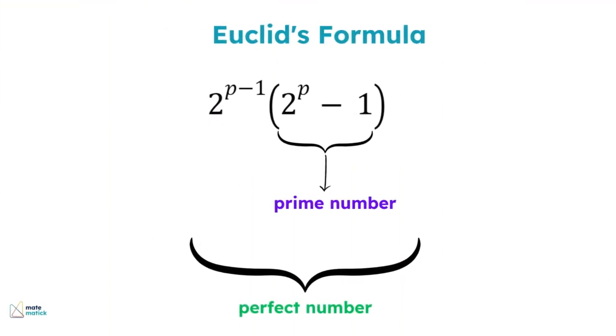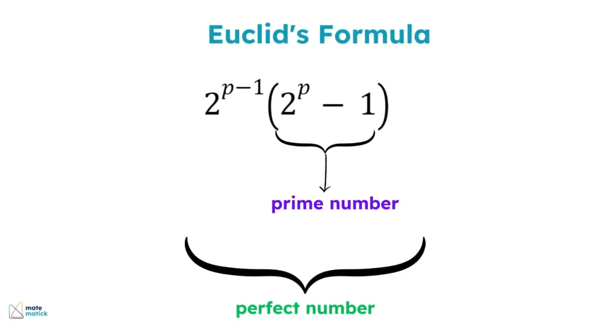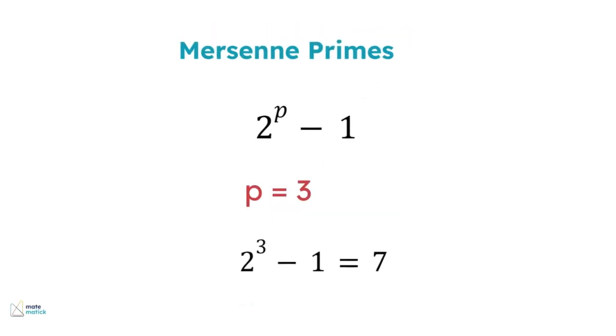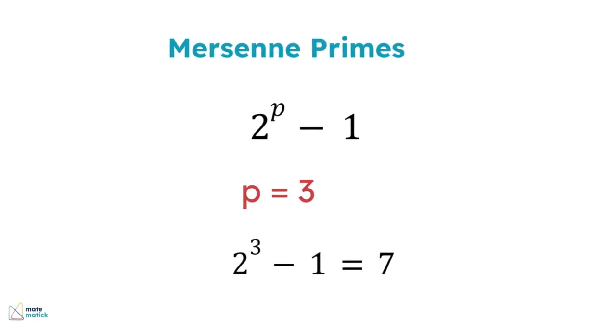Euclid's formula states that if 2 to the power of p minus 1 times 2 to the power of p minus 1 is an integer, and 2 to the power of p minus 1 is a prime number, then the resulting number is perfect. This type of prime number is known as a Mersenne prime. Mersenne primes are prime numbers of the form 2 to the power of p minus 1, where p is also a prime.